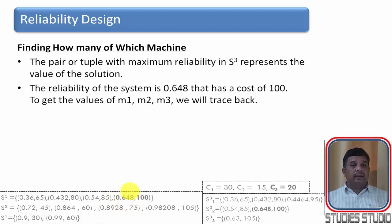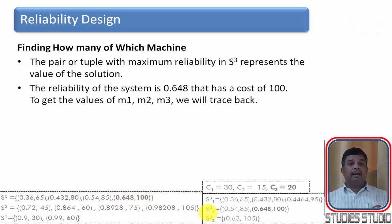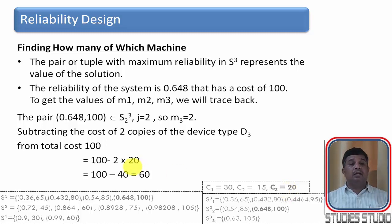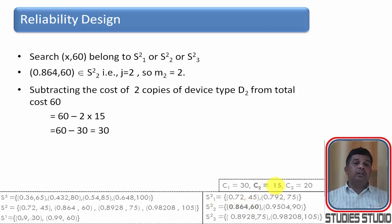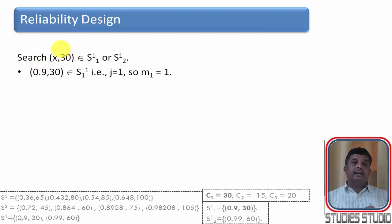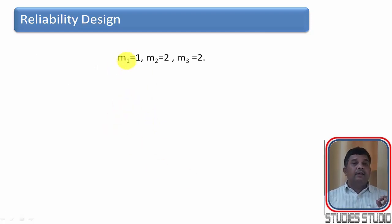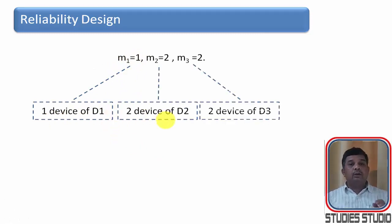From S_3, the maximum reliability pair is (0.648, 100), which came from S_{3,2} — meaning two copies of D3 were purchased at cost 40. Deducting 40 from 100 leaves 60. Searching for cost 60 in S_{2,1}, S_{2,2}, S_{2,3}: we find 60 in S_{2,2}, meaning two devices of D2 were purchased at cost 30. Deducting 30 from 60 leaves 30. Searching in S_{1,1} and S_{1,2}: we find 30 in S_{1,1}, meaning one device of D1. So the solution is: one device of D1, two devices of D2, and two devices of D3 within a total cost of 100.